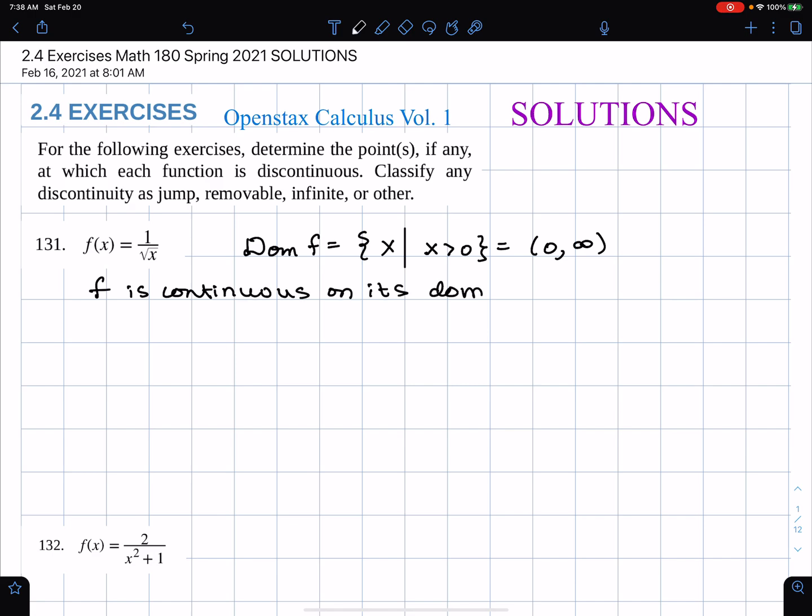This is in interval notation zero to infinity. The truth is that f is continuous on its domain. On the other hand, this function looks a lot, the graph to me, like the graph of one over x for x greater than zero. In particular, there's a vertical asymptote at x equals zero.